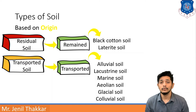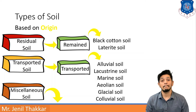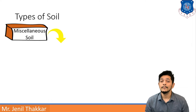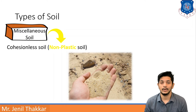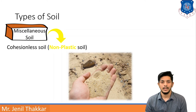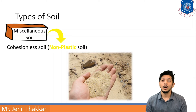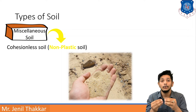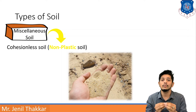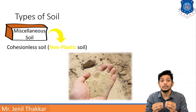The third type is miscellaneous soils. The first category under miscellaneous soil is cohesionless soil, also called non-plastic soil. As seen in the picture, sand is non-plastic. Cohesion means attraction between same-type soil particles; in sandy soil there is no such attraction, so we call it non-plastic — there is no plasticity.